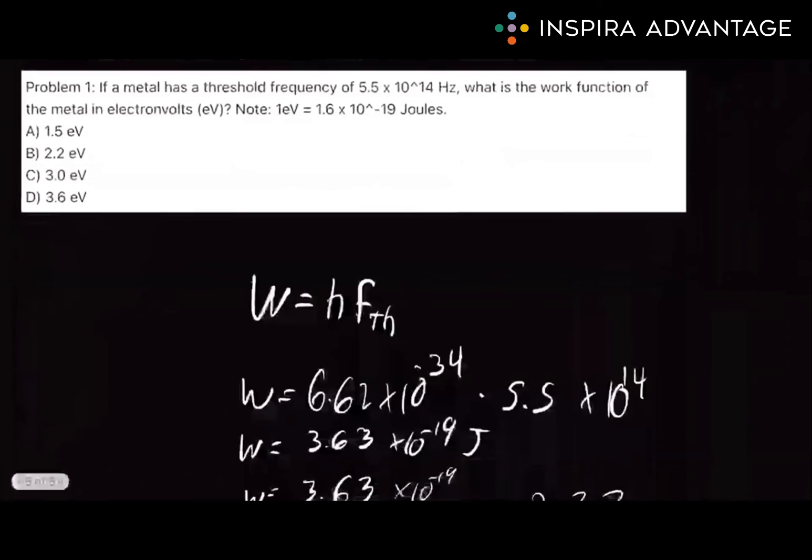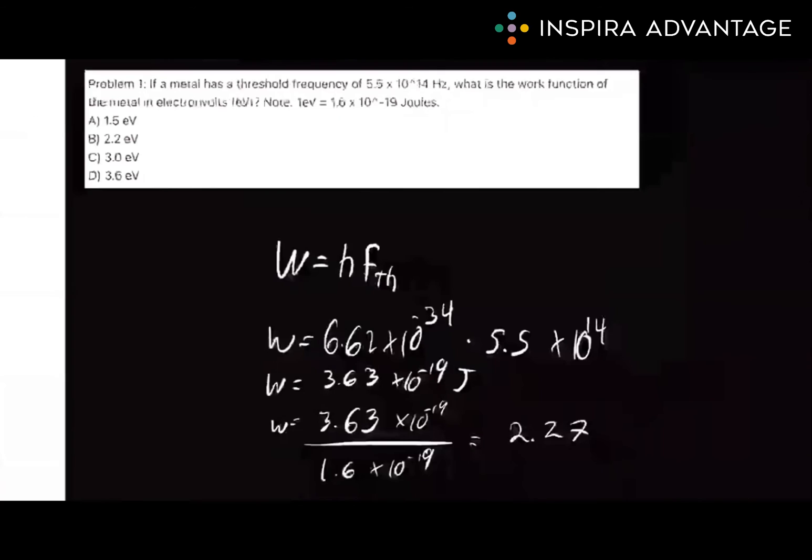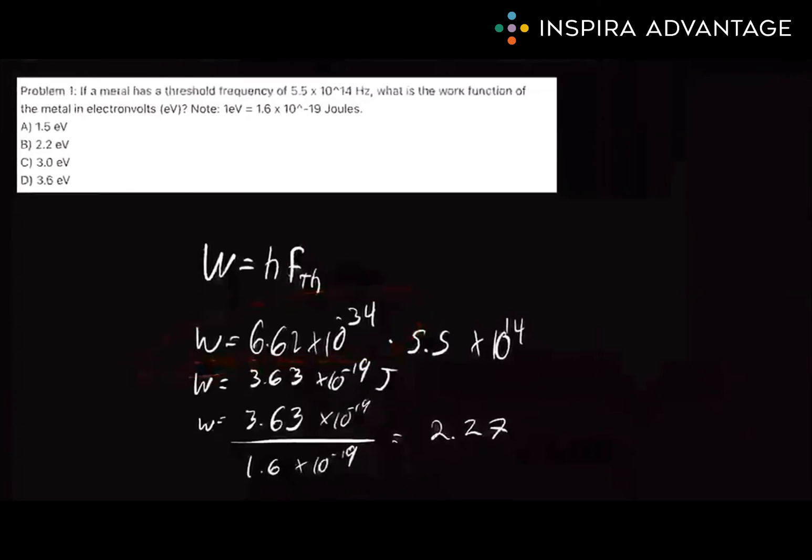All right, solution revealed. First thing we're going to do, write down that equation so we know what we're doing. W equals HF threshold. We know our work function... We know Planck's constant because it's never changing: 6.62 times 10 to the negative 34. We'll multiply this by the 5.5 times 10 to the 14th, which was given in the problem.